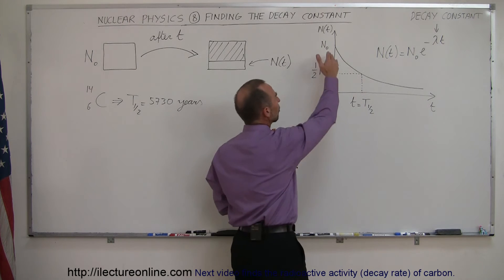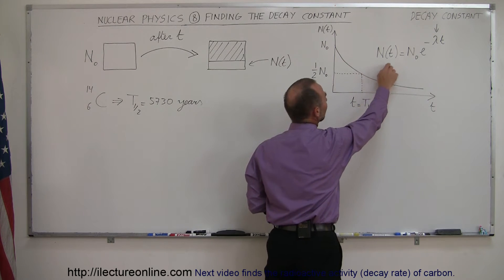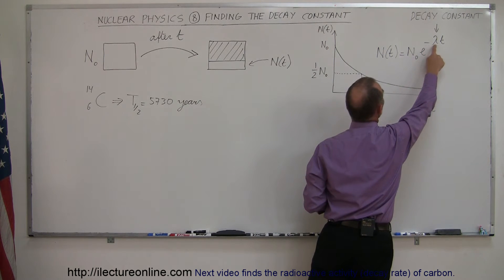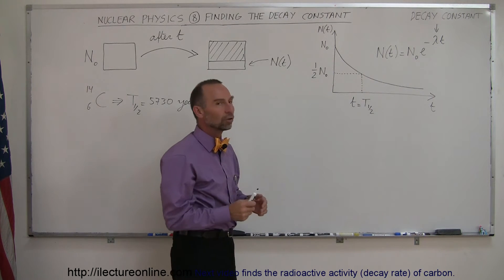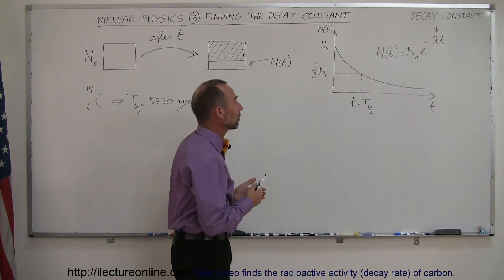That equation can be represented by the amount remaining at any point in time is equal to the initial amount you started with, times e to the minus some constant times t. That constant in front of the t is called the decay constant, and that determines how fast the radioactive material will decay.